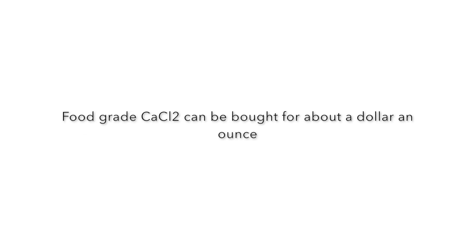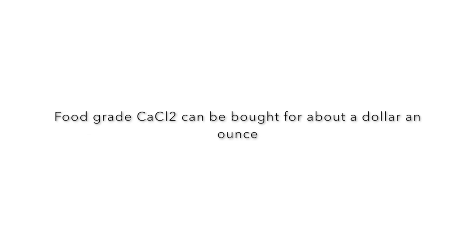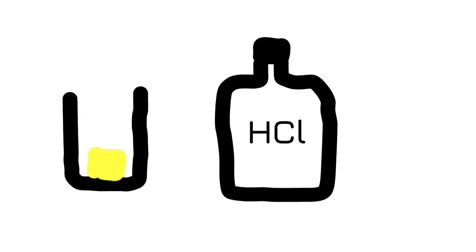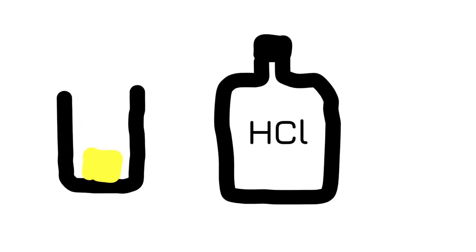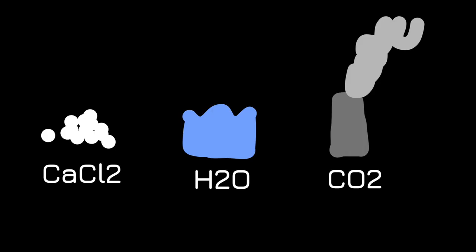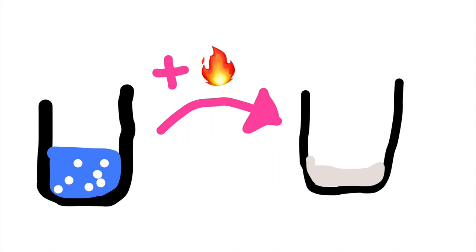Calcium chloride is very cheap, but if you don't have any on hand like me, it's really easy to make. All you have to do is add hydrochloric acid to calcium carbonate, which can be sourced from seashells or limestone. This will form calcium chloride, water, and carbon dioxide. The calcium chloride will be dissolved into the water, which can be boiled off in a separate container to leave behind calcium chloride crystals.